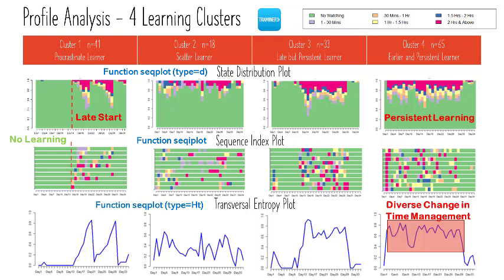Profile analyses are carried out to describe the characteristics of the four-cluster learner typology. These four clusters are named: the procrastinate learners, the scattered learner, the late but persistent learner, and the early and persistent learner. Both the stage distribution and the sequence index plot show that the procrastinate learners are late starters in learning, shown by the large patch of green color at the start of the course. As there is no learning that takes place at the early part of the course, the entropy line remains flat with zero values.